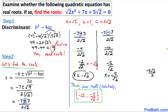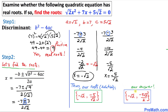So our roots and solution set are as shown. Rationalizing the denominator gives us our final clean solution set. That is our final answer. Thanks for watching, and please don't forget to subscribe to my channel for more exciting videos.